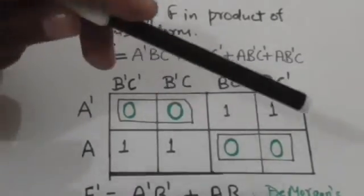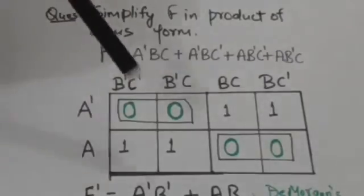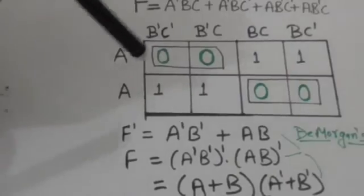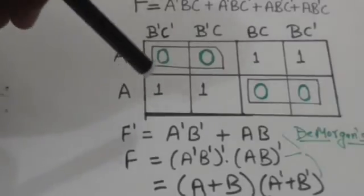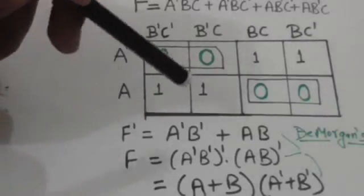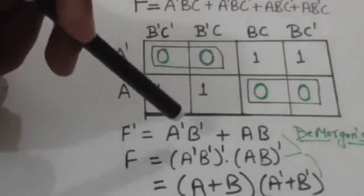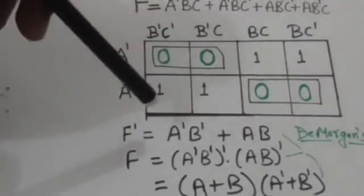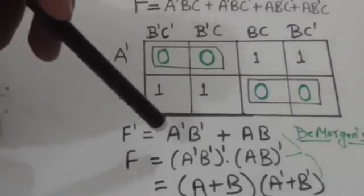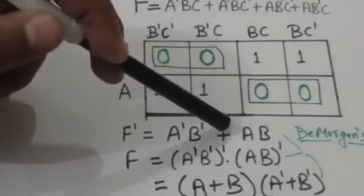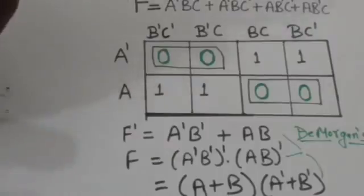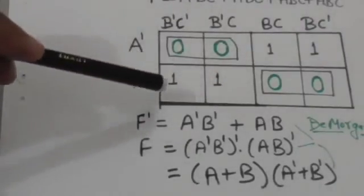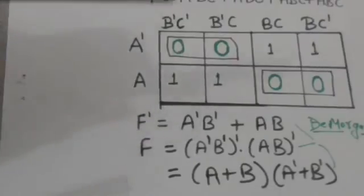This term a·b will also be included in the complement of the function f. So the f-complement would be the sum of two terms: a-not b-not and a·b. The f-complement equals a-not b-not plus a·b.